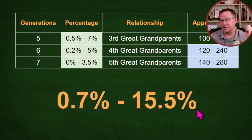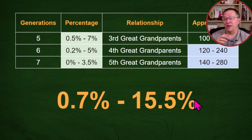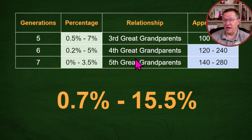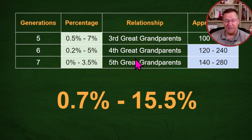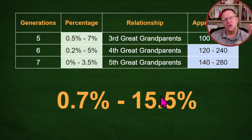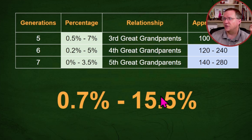On the other hand, 15.5% might make you think that's like a second or first great grandparent. But in actuality, it's three different people from three different lines that are further back in generations. So if you're stuck looking at a first or second great grandparent trying to figure out who the Ashkenazi Jewish person was, because you have a significant amount of that ethnicity, you might actually be looking in the wrong spot. You might need to be looking several generations back.